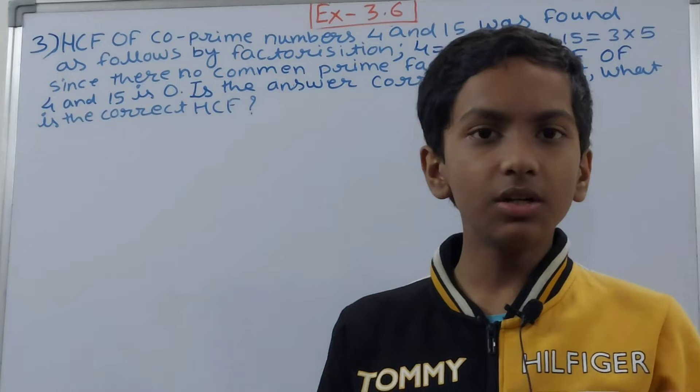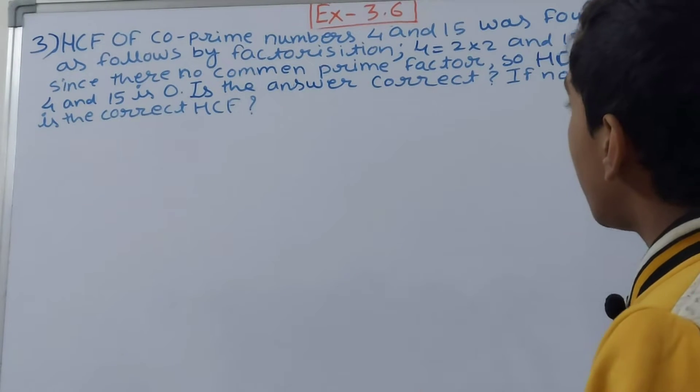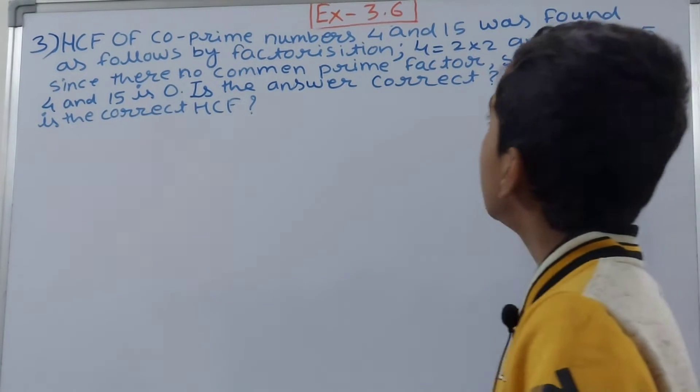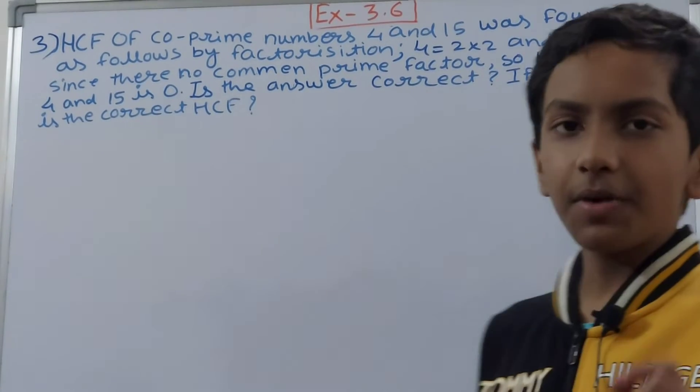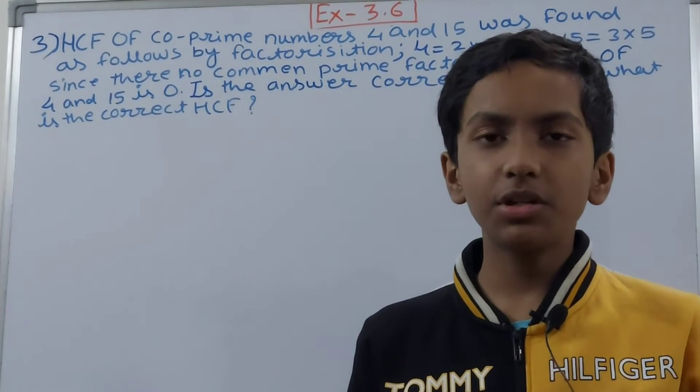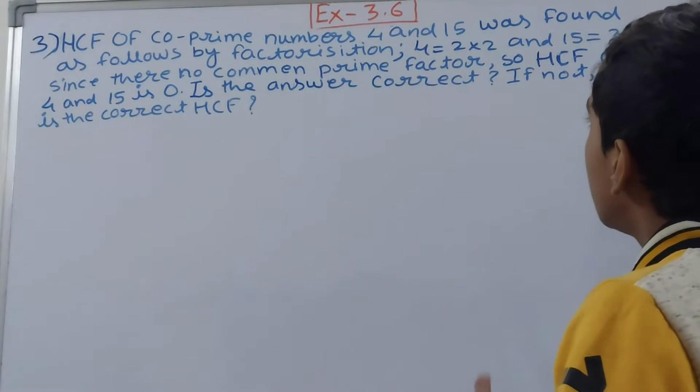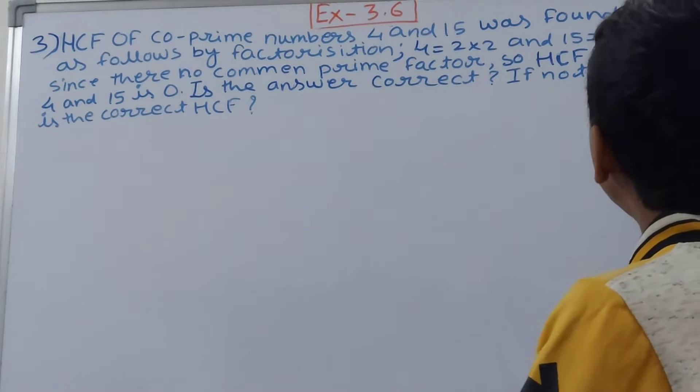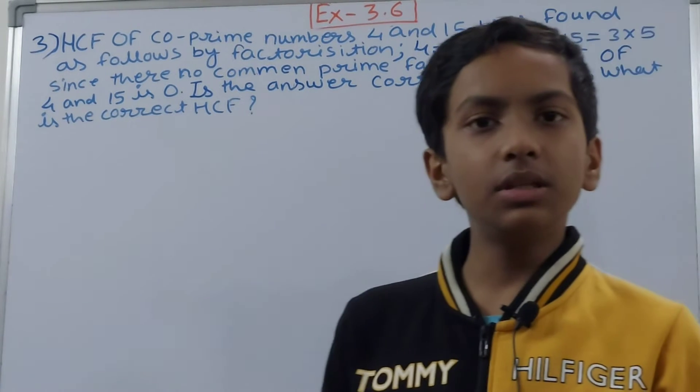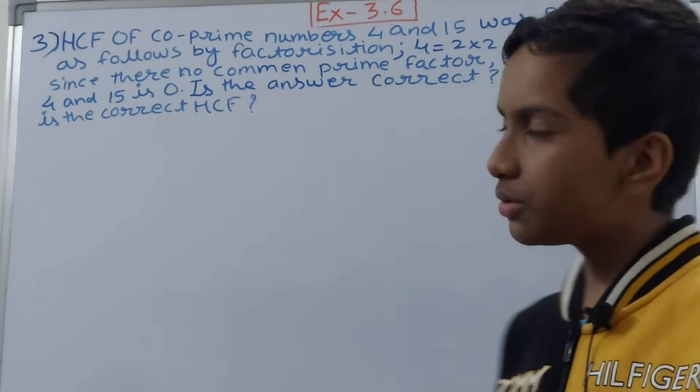Now it has taken two co-prime numbers, 4 and 15, right? And it is saying that by prime factorization, it has found that its factors are 2 into 2 and 3 into 5. Now there is nothing common in this, right? So it is saying if there is nothing common, is the HCF 0?